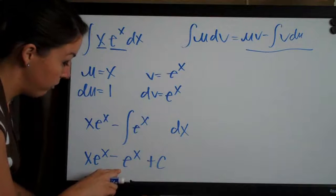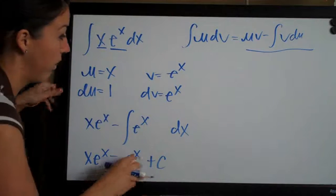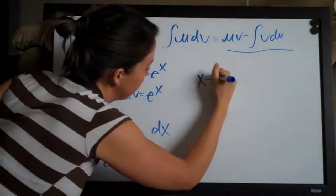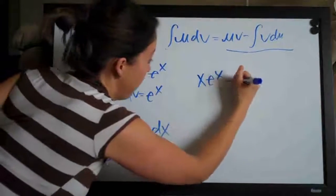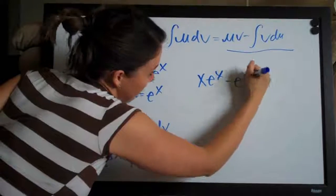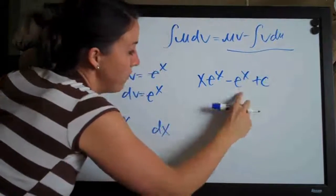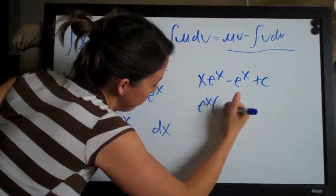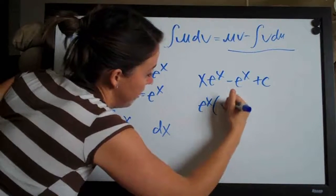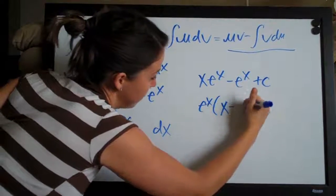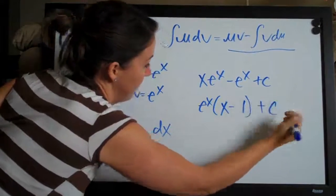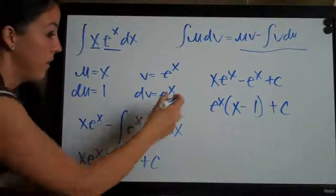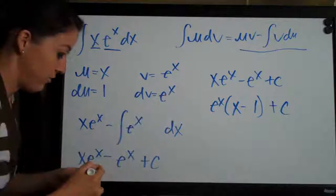If you'd like, you can factor out an e to the x. So you either have x·eˣ minus eˣ plus C, or if you factor out e to the x, you get eˣ times (x minus 1) plus C. Either way, they're equally correct — that's your final answer.